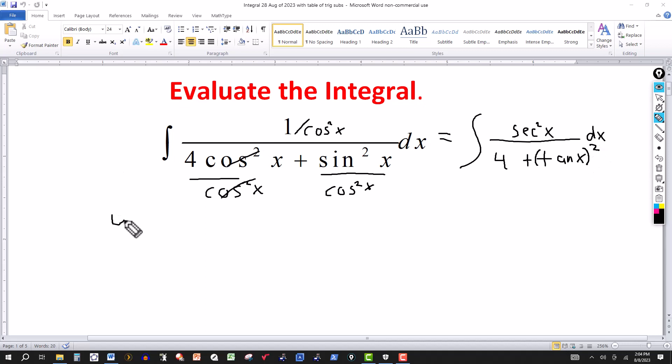And I'm going to let u equal tangent of x. So du would be secant squared of x dx. And now I have my dx here.